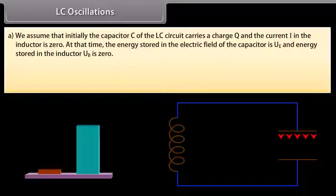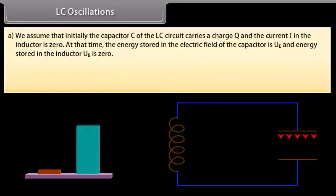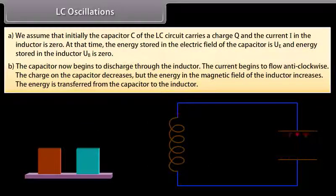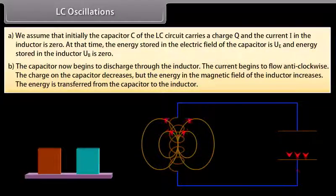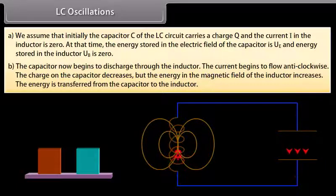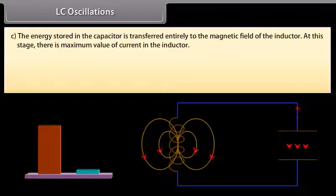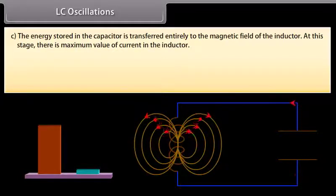LC oscillations: Initially the capacitor C carries charge Q and current I in the inductor is 0. Energy stored in the capacitor is UE and in the inductor UB = 0. The capacitor begins to discharge through the inductor; current flows anti-clockwise. Charge on the capacitor decreases, but energy in the magnetic field of the inductor increases — energy transfers from the capacitor to the inductor.